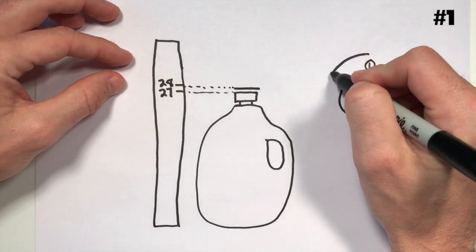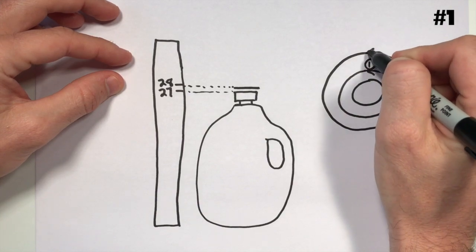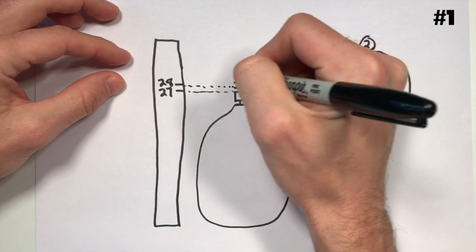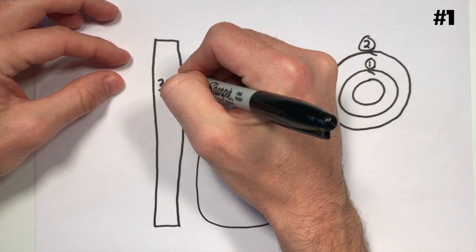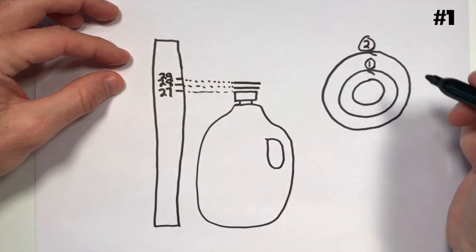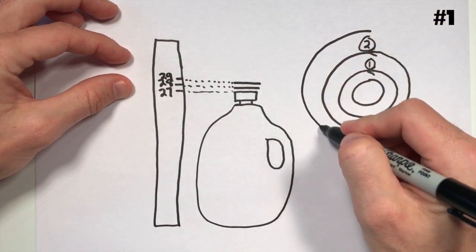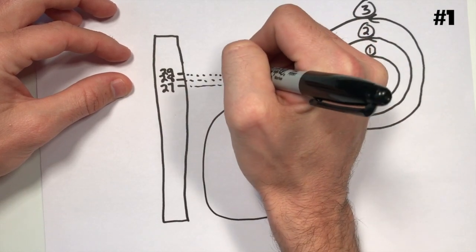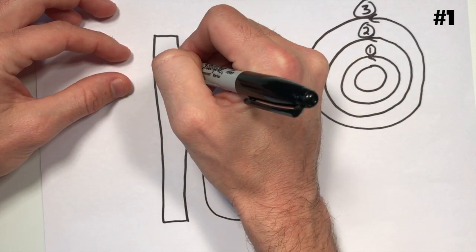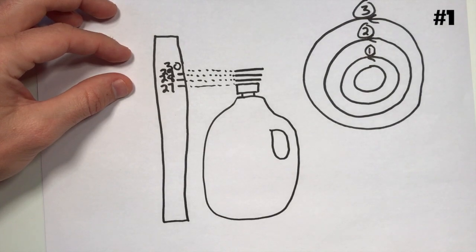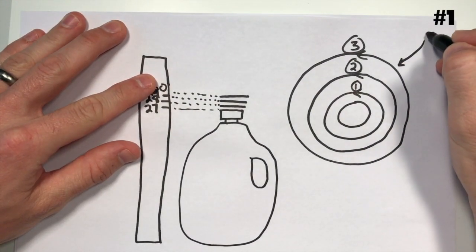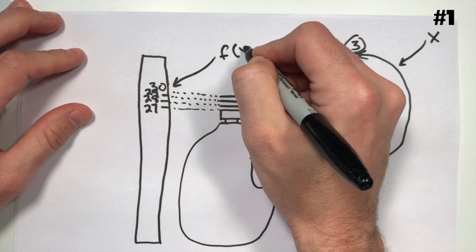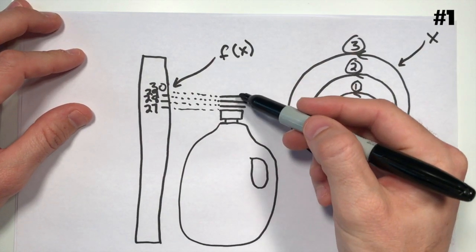Now let's say you turn it again. So that's two turns, and the cap rises up a little bit more — now it's at 29. Another turn of that cap, and the cap rises up again to 30. If x is equal to the number of turns, and f of x is equal to the height of the top of the cap.